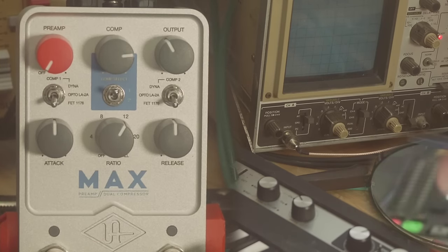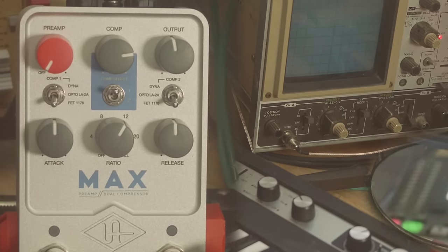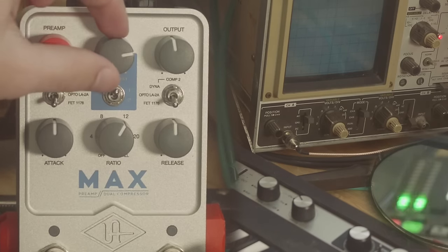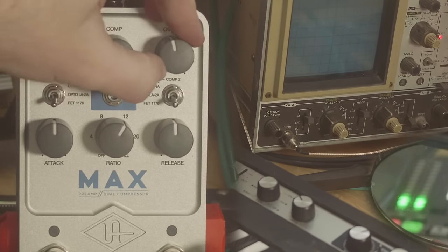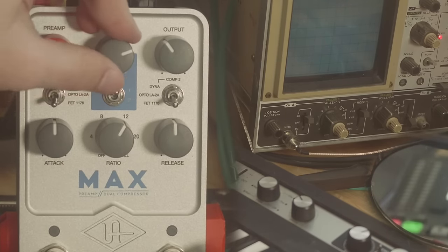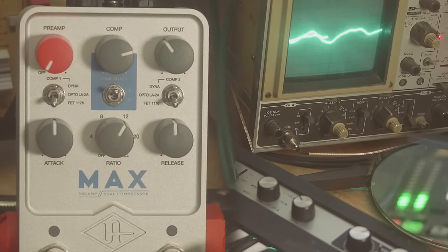The way a lot of compressors are set up, there's something called a threshold. When a sound goes above that threshold, the circuitry in the compressor will bring that sound down. We don't have anything labeled threshold. We can indirectly control it in the 1176 model because we're changing our input level here.